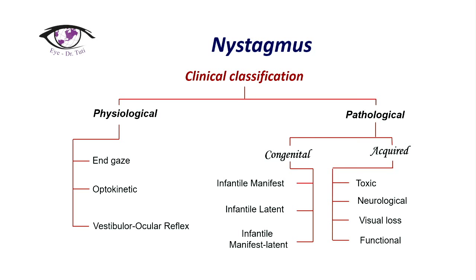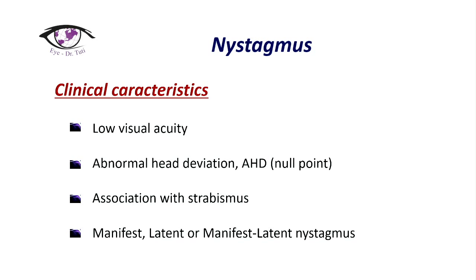In this slide we can see a clinical classification of nystagmus, which can be physiological and pathological. Pathological includes congenital and acquired forms. Clinical characteristics include low visual acuity, abnormal head deviation, strabismus, and it can be manifest, latent, or manifest-latent nystagmus. Of course, nystagmus does not always present with abnormal head deviation or strabismus.